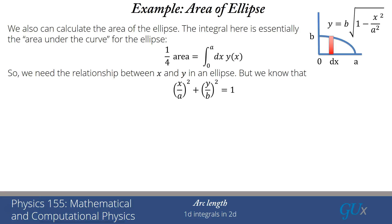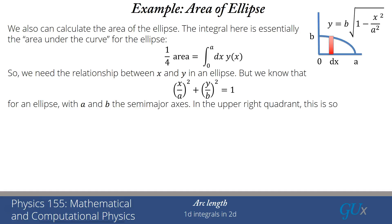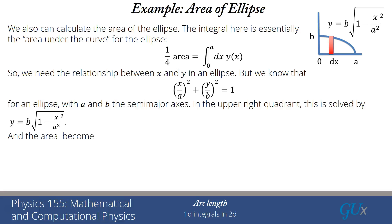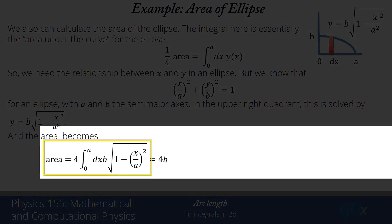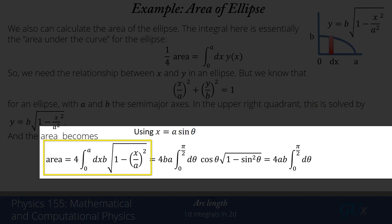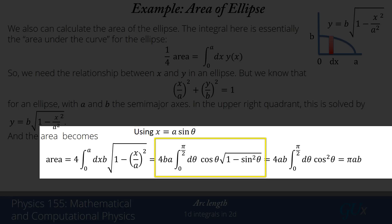The relation (x/a) squared plus (y/b) squared equals 1 gives us, in the upper right quadrant, y equals b times the square root of 1 minus x squared over a squared. I substitute that into the integrand: the area equals 4 times the integral from 0 to a of dx times b times the square root of 1 minus (x/a) squared. Now I use the substitution x equals a sine theta, so dx equals a cosine theta d theta. Factoring out a, I get 4ab times the integral from 0 to pi over 2 of cosine theta d theta, multiplied by the square root of 1 minus sine squared theta, which is just cosine theta. So I get 4ab times the integral from 0 to pi over 2 of cosine squared theta d theta.